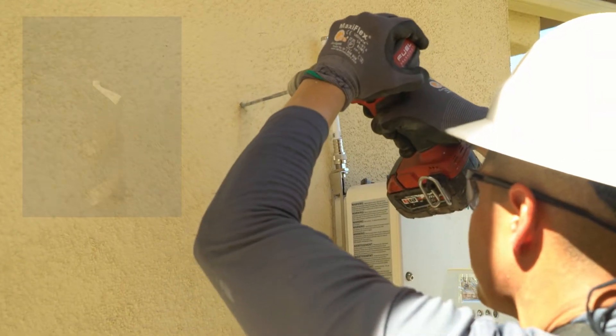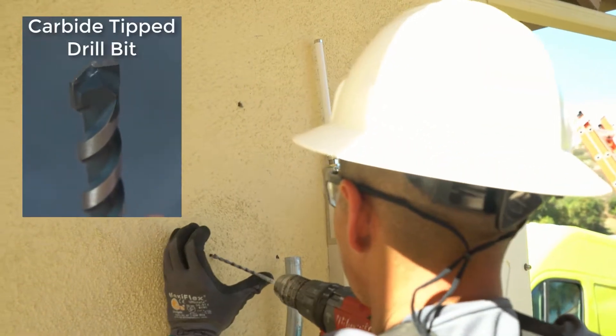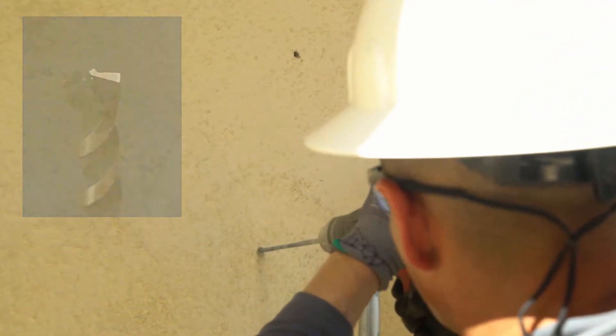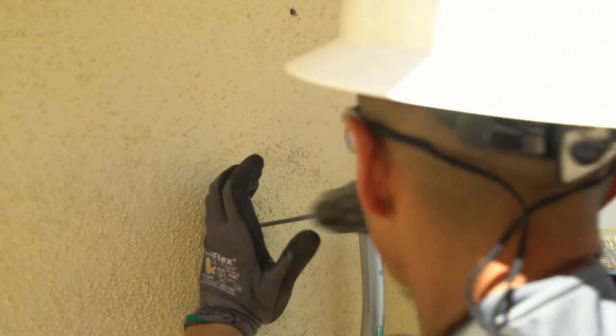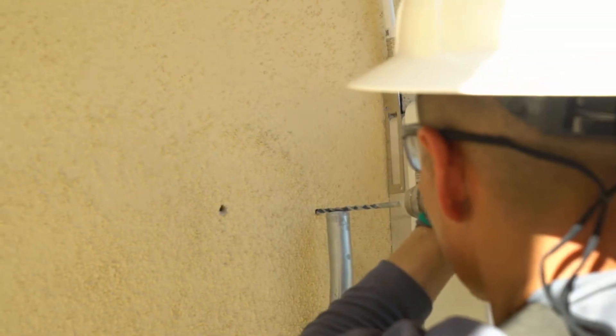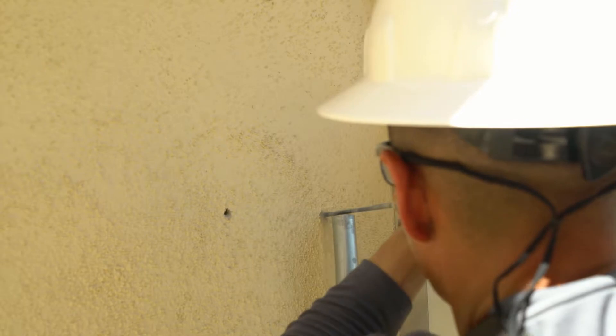Then we use a drill driver with, I recommend, a carbide tip drill bit so that you can cut through the stucco without dulling that drill tip. You're going to drill in using the drill driver or an impact driver and make your holes.